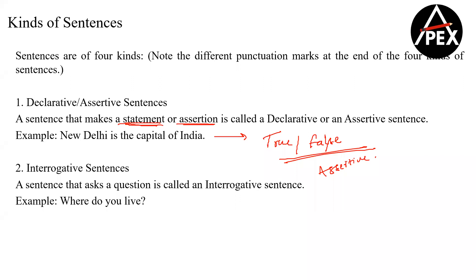We use sentences to put out our ideas. We have different types of ideas, and each type of idea can be classified into a different type of sentence. The first type is the declarative or assertive sentence.